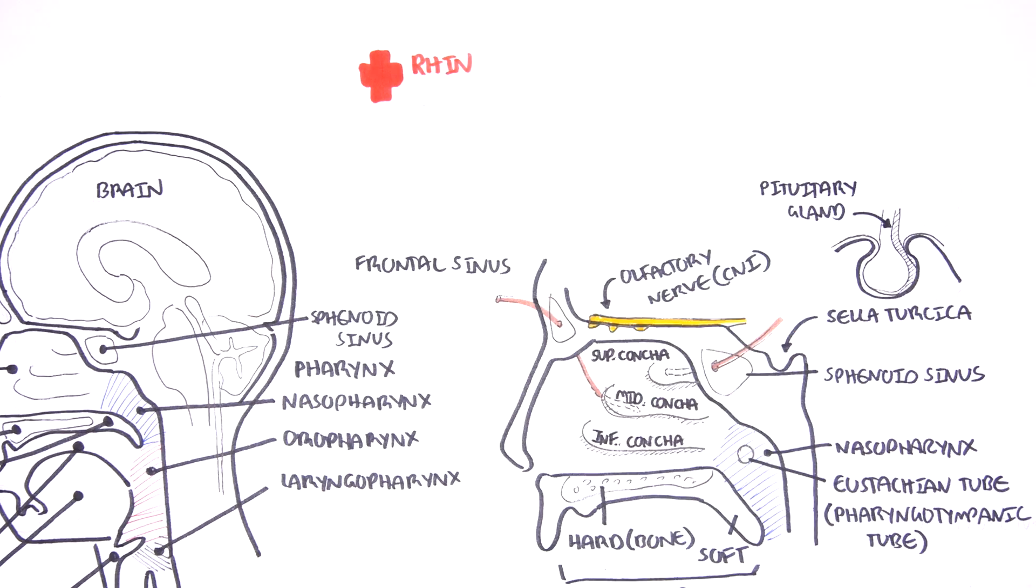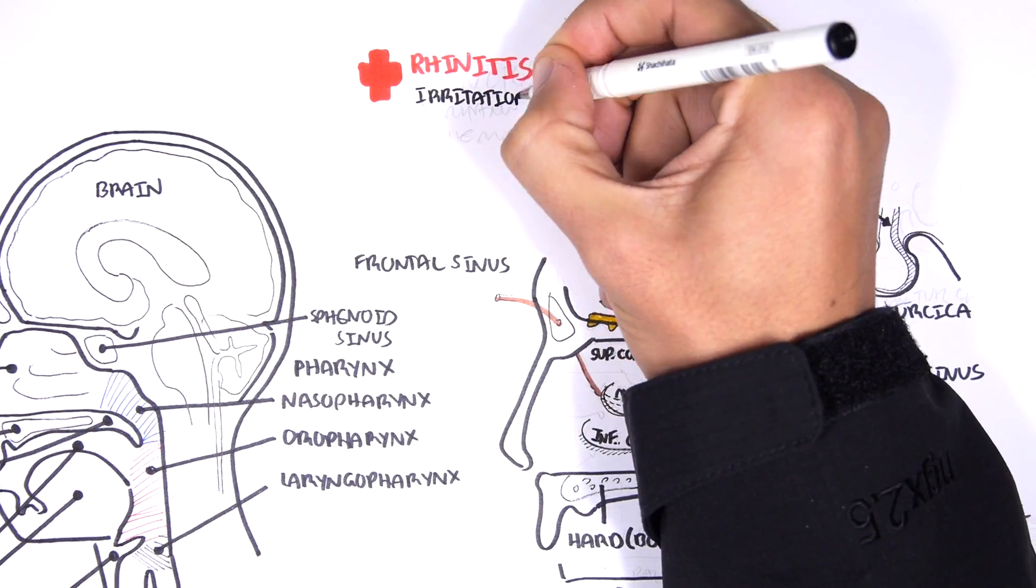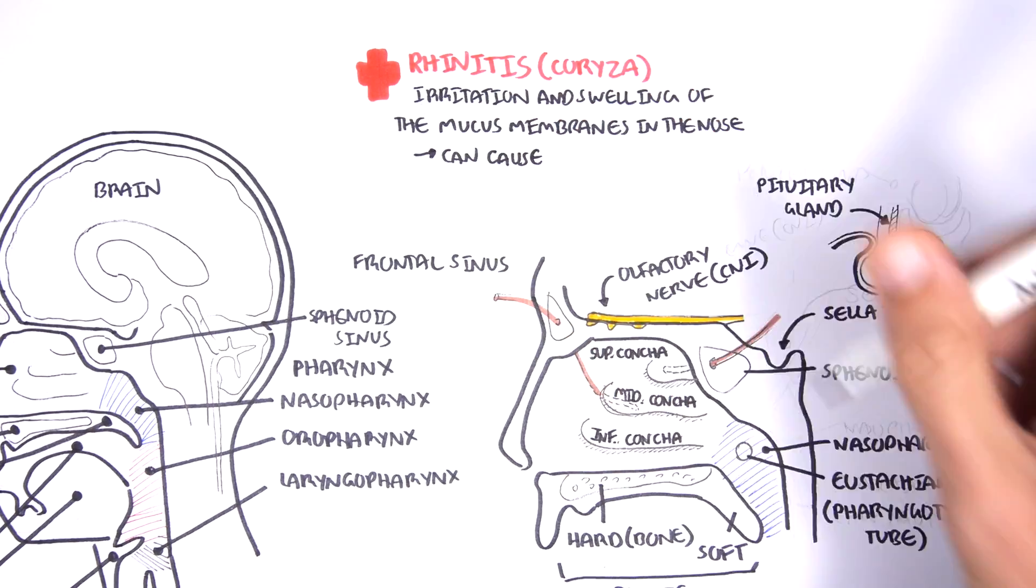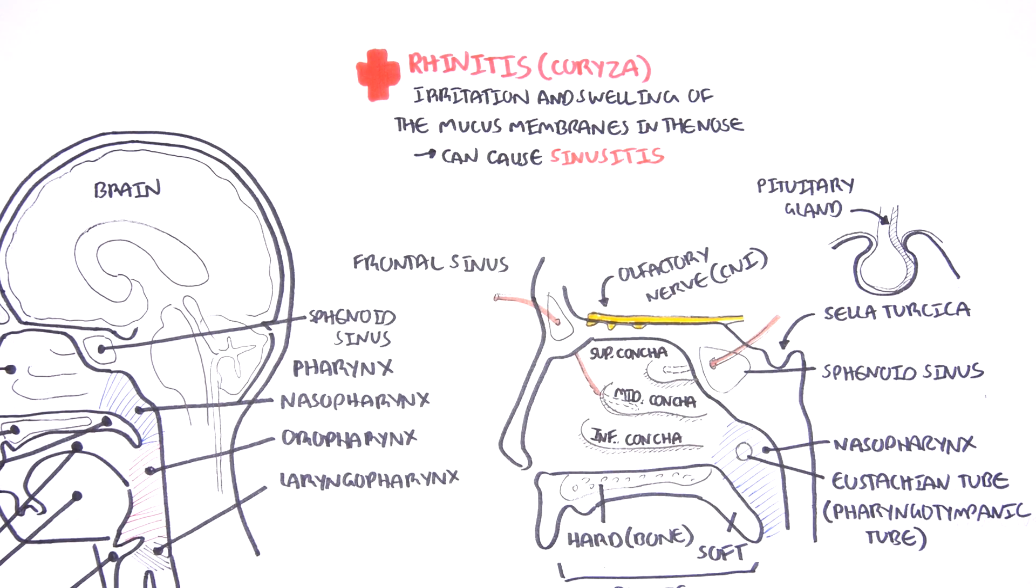Rhinitis, also known as coryza, is irritation and inflammation of the mucosa membranes in the nose. Because the nose and sinuses are joined, as we have learned, rhinitis can lead to sinusitis, which is inflammation of the sinuses.